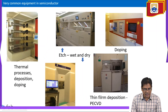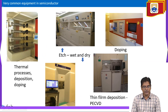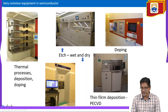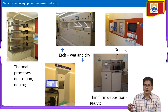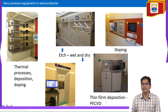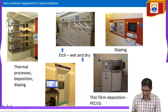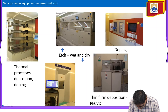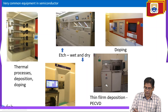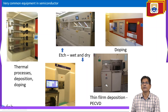The fabrication process flow is a continuously recycling cycle: oxidization → deposition → lithography → doping → etching (wet or dry). Thin film deposition is done by PE-CVD — plasma-enhanced chemical vapor deposition — not just sputtering. This cyclic process is repeated to build up the device structure layer by layer.